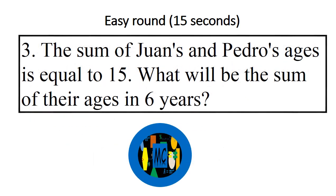Question 3: The sum of Juan's and Pedro's ages is equal to 15. What will be the sum of their ages in six years? Go!